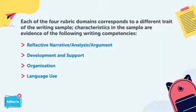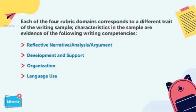The writing test is scored with a four-domain analytic scoring rubric. Each grade has a unique rubric because it assesses different writing modes, but the underlying design is the same across all grades. Each of the four rubric domains corresponds to a different trait of the writing sample, covering competencies including reflective, narrative, analysis, argument, development and support, organization, and language use. For each ASPIRE mathematics test, grade 3 through early high school, the parts of the 12 math domains that correspond to each grade become a reporting category for the test, resulting in 5 reporting categories for each grade's test.